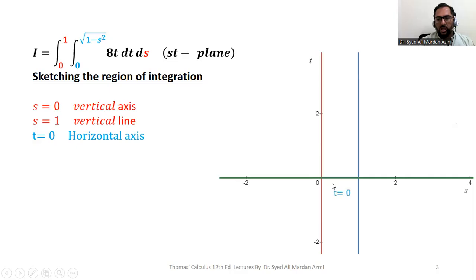So we have the equations t equal to 0 for this green line, s equal to 1 for this vertical line, blue color line, and then s equal to 0 for this t axis.